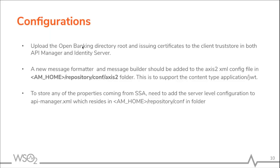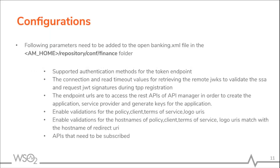After that, to store any properties coming from the SSA, we need to add a server-level configuration to the API Manager XML, which resides inside the API Manager Home repository conf folder. Following parameters need to be added to the Open Banking XML file, which is inside the AM Home repository conf finance folder.